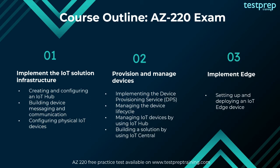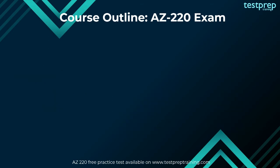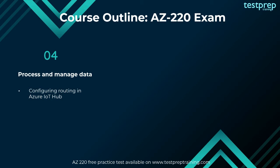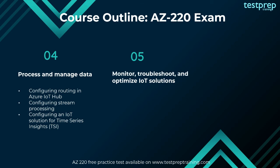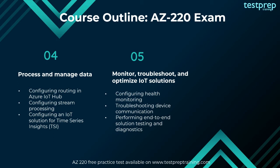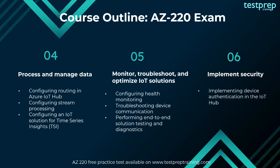Number three — implement edge contains three subtopics: setting up and deploying an IoT Edge device, developing modules, and configuring an IoT Edge device. Number four — process and manage data contains three subtopics: configuring routing in Azure IoT Hub, configuring stream processing, and configuring an IoT solution for time series insights. Number five — monitor, troubleshoot, and optimize IoT solutions contains three subtopics: configuring health monitoring, troubleshooting device communication, and performing end-to-end solution testing and diagnostics. Number six — implement security contains three subtopics: implementing device authentication in IoT Hub, implementing device security using DPS, and implementing Azure Security Center for IoT.